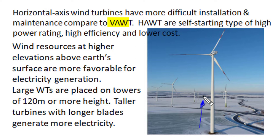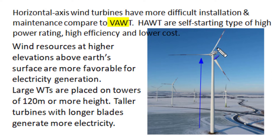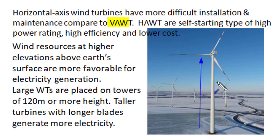Wind resources at higher elevation, around 120 meters above the earth's surface, are more favorable for electricity generation. So modern high-power utility turbines of 2 or 3 megawatts are placed on towers of height either 120 or 140 meters. These taller turbines have longer turbine blades, and when they rotate they sweep a larger area, thus generating more electricity.